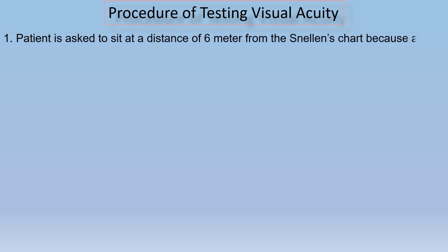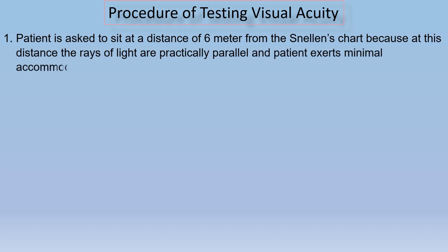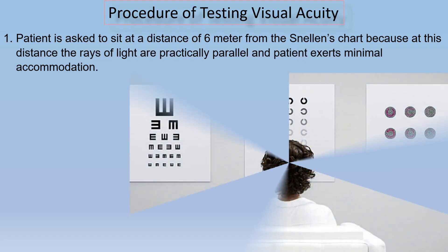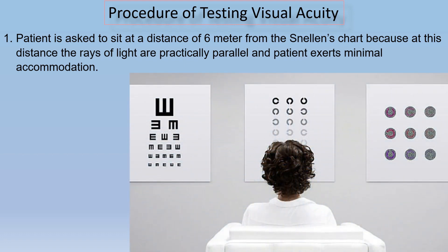Step number 1: Patient is asked to sit at a distance of 6 meters from the Snellen's chart, because at this distance the rays of light are practically parallel and the patient exerts minimum accommodation. So we will put the patient at 6 meter distance from the Snellen's chart.